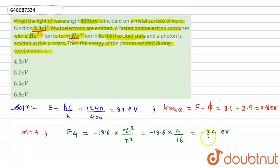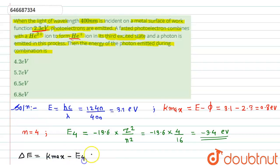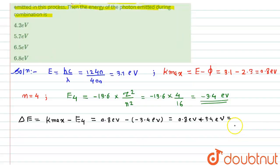The energy of the photon emitted during combination is: ΔE = K_max − E₄ = 0.8 eV − (−3.4 eV) = 0.8 + 3.4 = 4.2 electron volt. This is our required answer — the energy of the photon emitted during the combination is 4.2 electron volt, and option A is the correct answer.